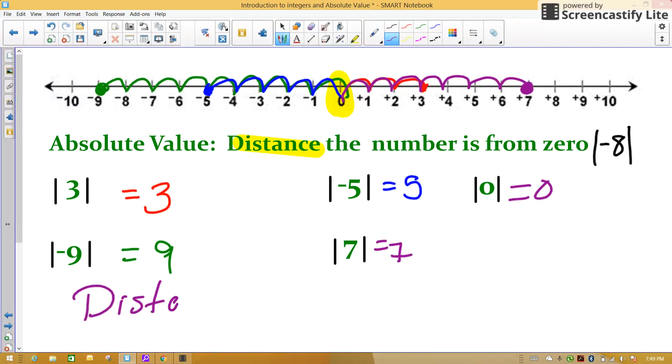Well, you say, but Mrs. Kopp, what if I go three spaces backwards? That's negative 3. No, you still went three spaces, so it is a positive 3.